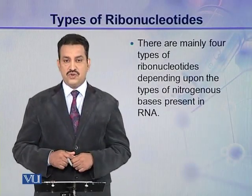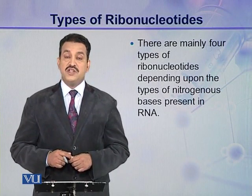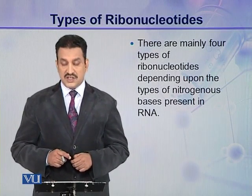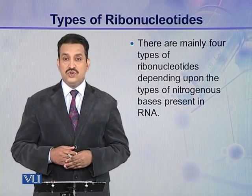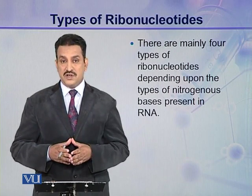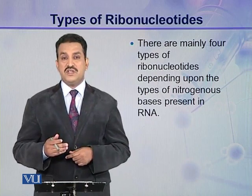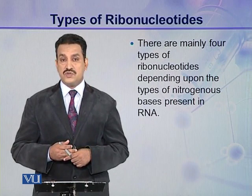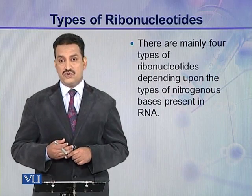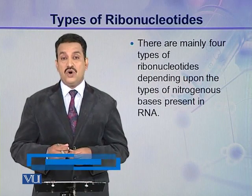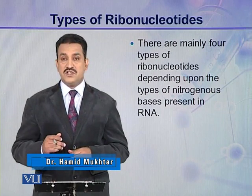There are four main types of ribonucleotides present in cells, and it depends upon the types of nitrogenous bases present in a ribonucleotide. You know the structure of a ribonucleotide — there are three components: one is pentose sugar (ribose sugar), the other one is phosphoric acid, and the third one is nitrogenous base. The two components, phosphoric acid and ribose sugar, are the same in all ribonucleotides, and the only difference is in the nitrogenous base.